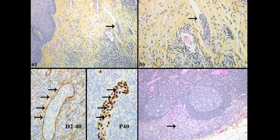In panel D, using the P40 stain, the squamous cell tumor cell nuclei within the lymphatic space are highlighted. And finally, in panel E, we can see metastatic squamous cell carcinoma within a lymph node.